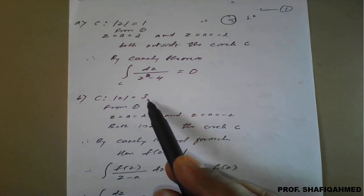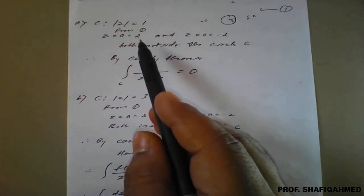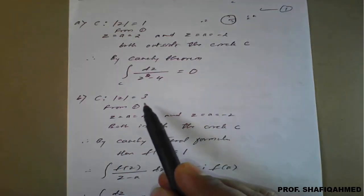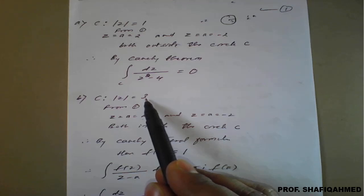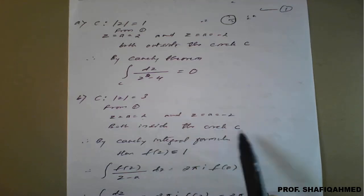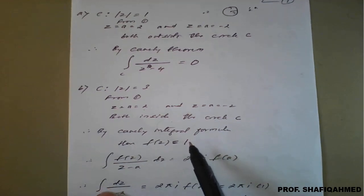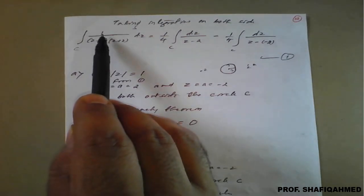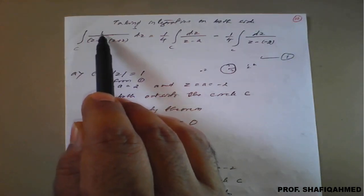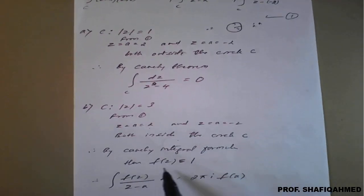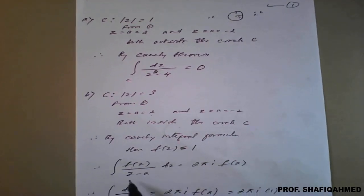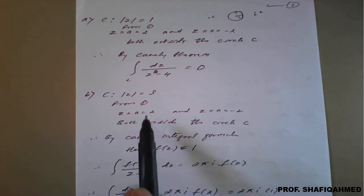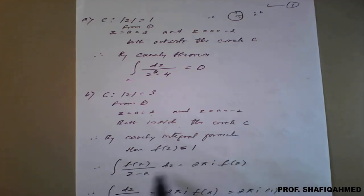For the second curve, |z| = 3, we have the same two poles: z = 2 and z = minus 2. Both 2 and minus 2 lie inside the circle of radius 3, so both poles are inside the circle C. We need to apply Cauchy's integral formula. While applying the formula, we identify that f(z) in the numerator is 1, since f(z) = 1 here. We have two values of a: plus 2 and minus 2, which we will simplify one by one.